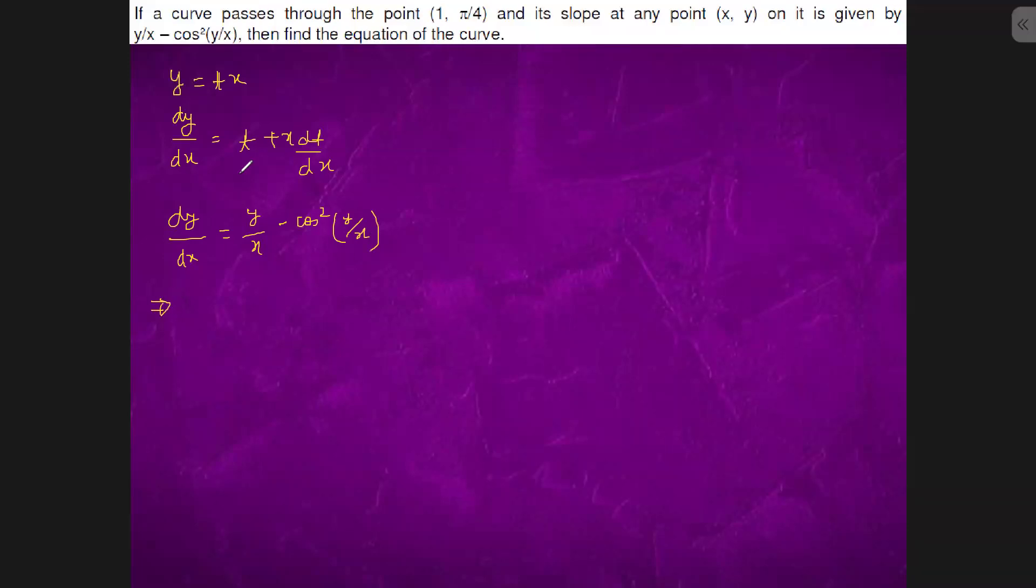If we substitute this value with equation 1, we will have t plus x dt by dx is equal to t minus cos square t. This t, this t cancel.